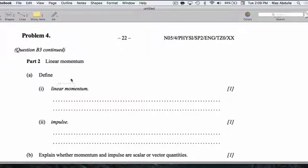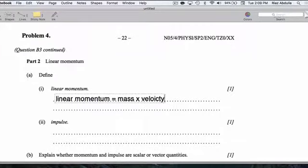All right everybody, I'm going to finish up with problem four. Keep the definition system simple. Linear momentum is mass times velocity. That's it.